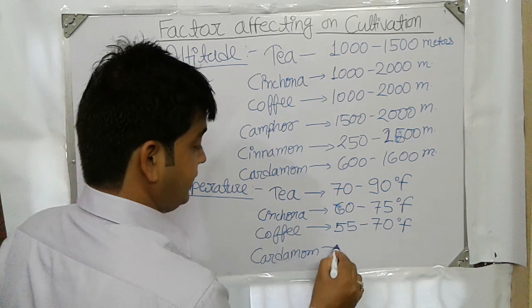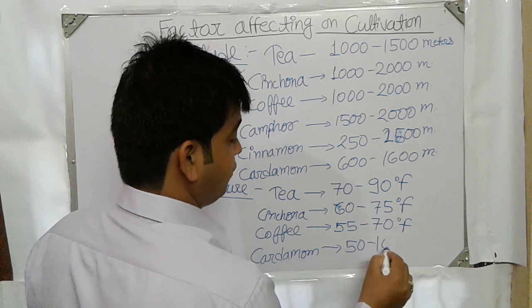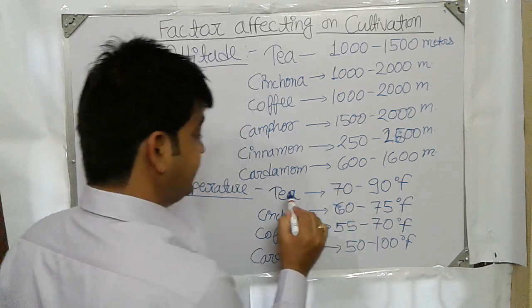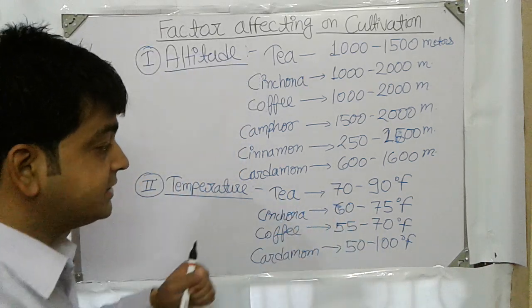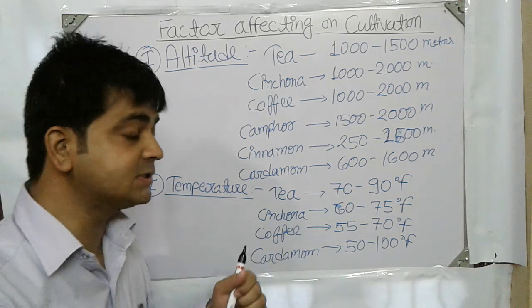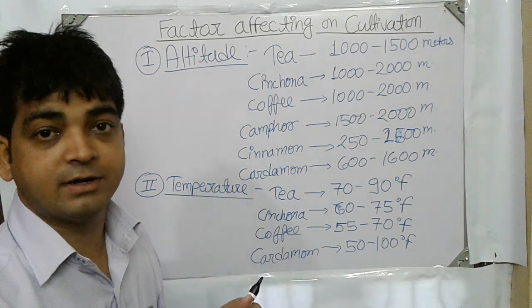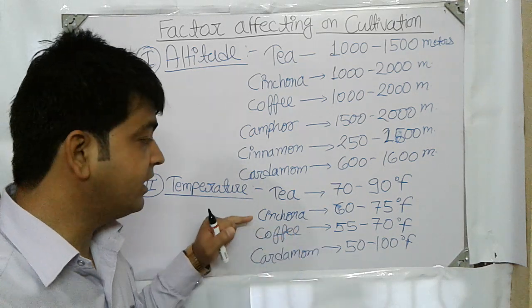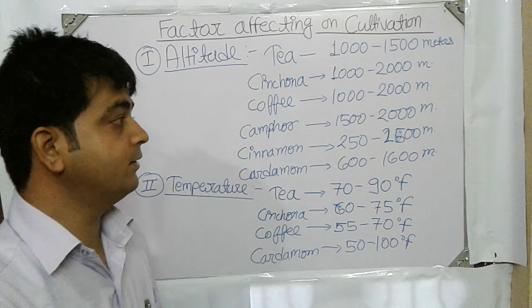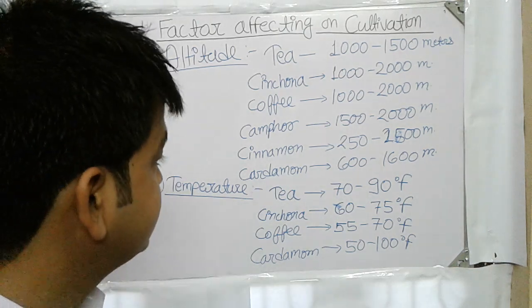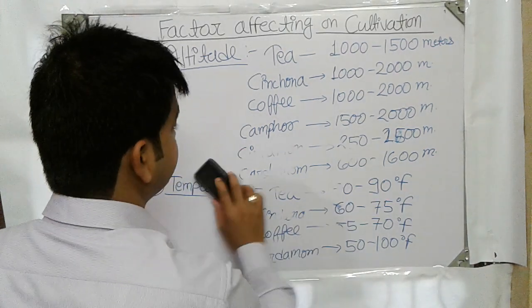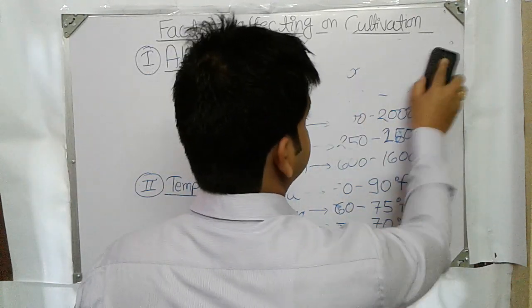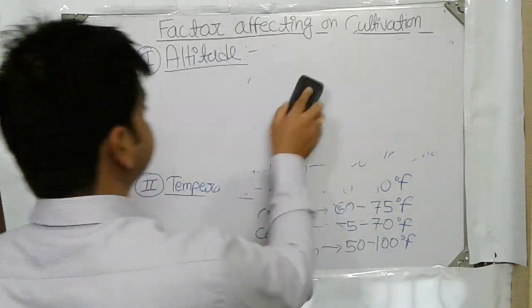Cardamom requires 50 to 100 Fahrenheit. So the temperature requirement varies for each plant. If the climatic temperature lies within this specific range, we can get good quality medicinal plants. This is also one of the important factors affecting different medicinal plants.